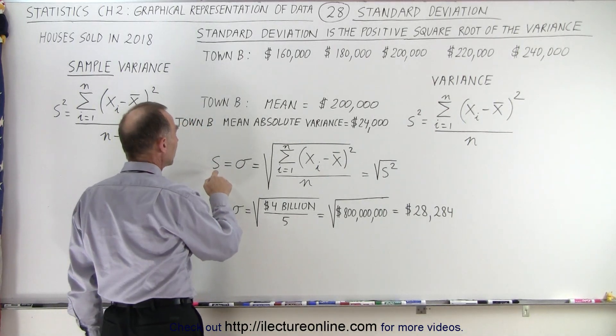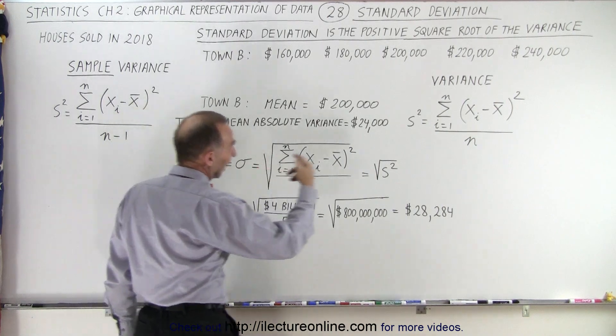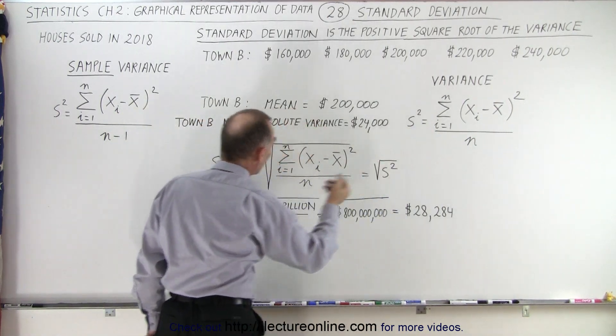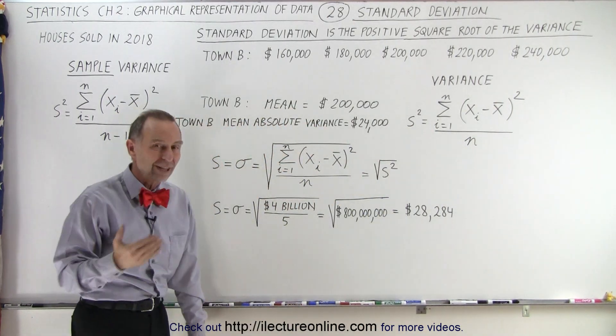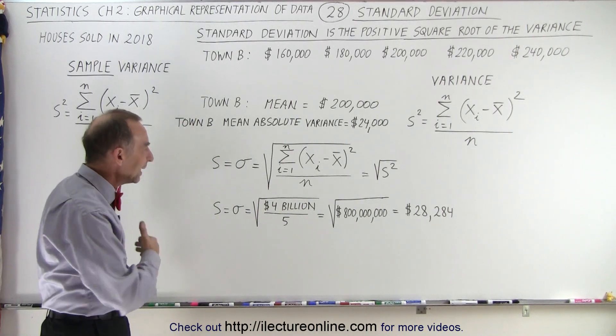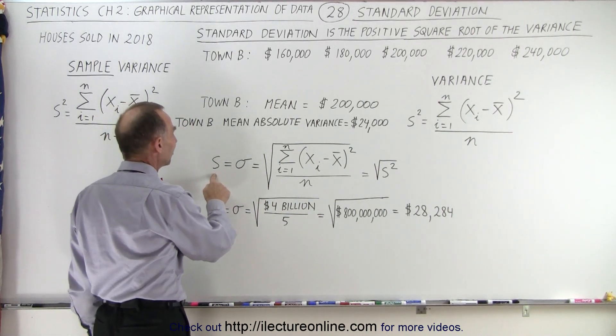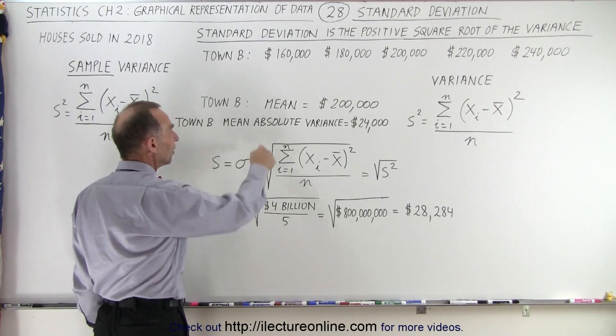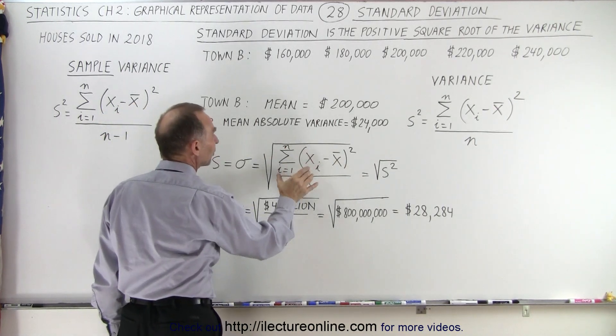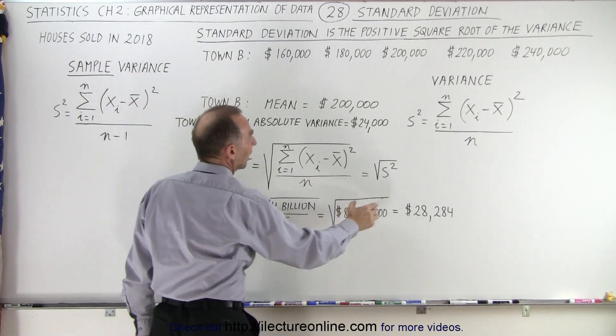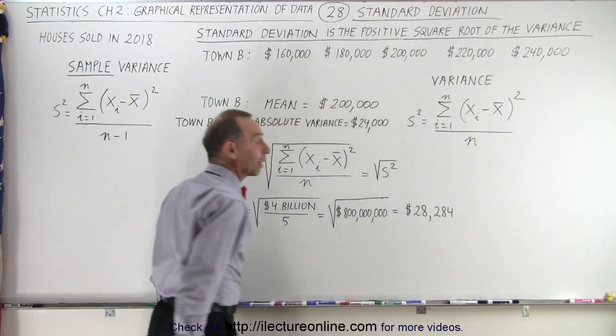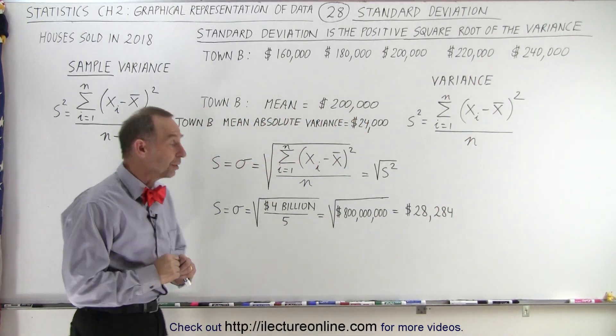And so we use two symbols: we either use s, because s is the square root of s squared, or we use the symbol sigma, the Greek letter sigma. Either one means the same thing, it means the standard deviation, and it's the square root of the variance, the square root of s squared. s squared is defined by this right here, and by now, we should be familiar with the variance.